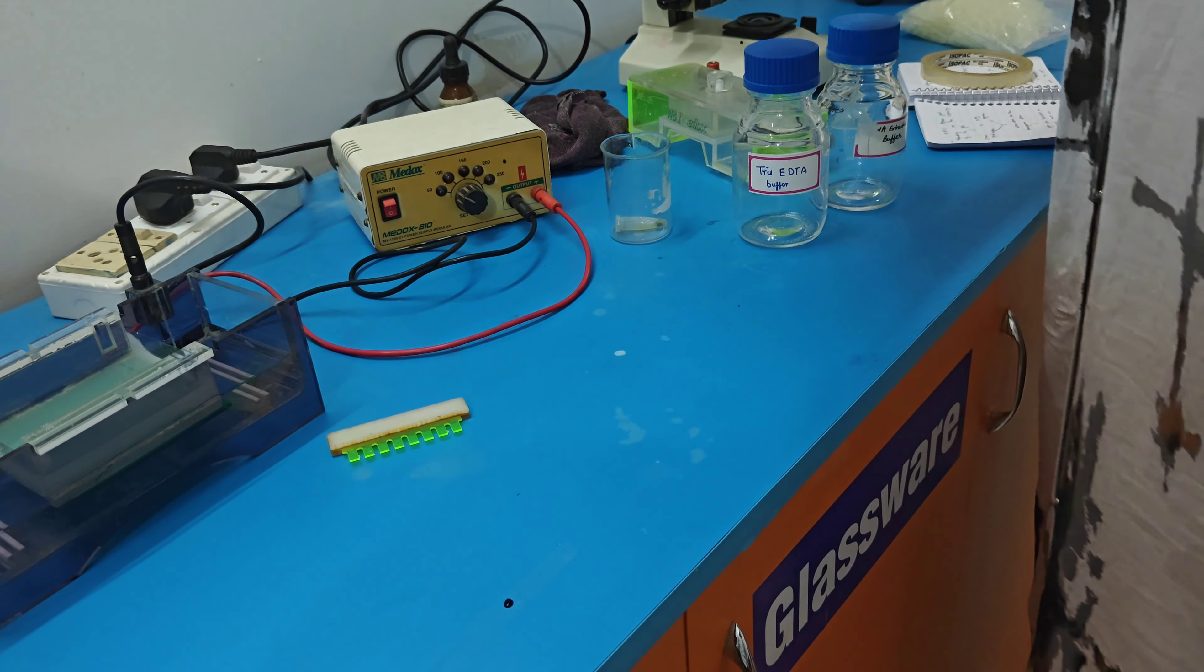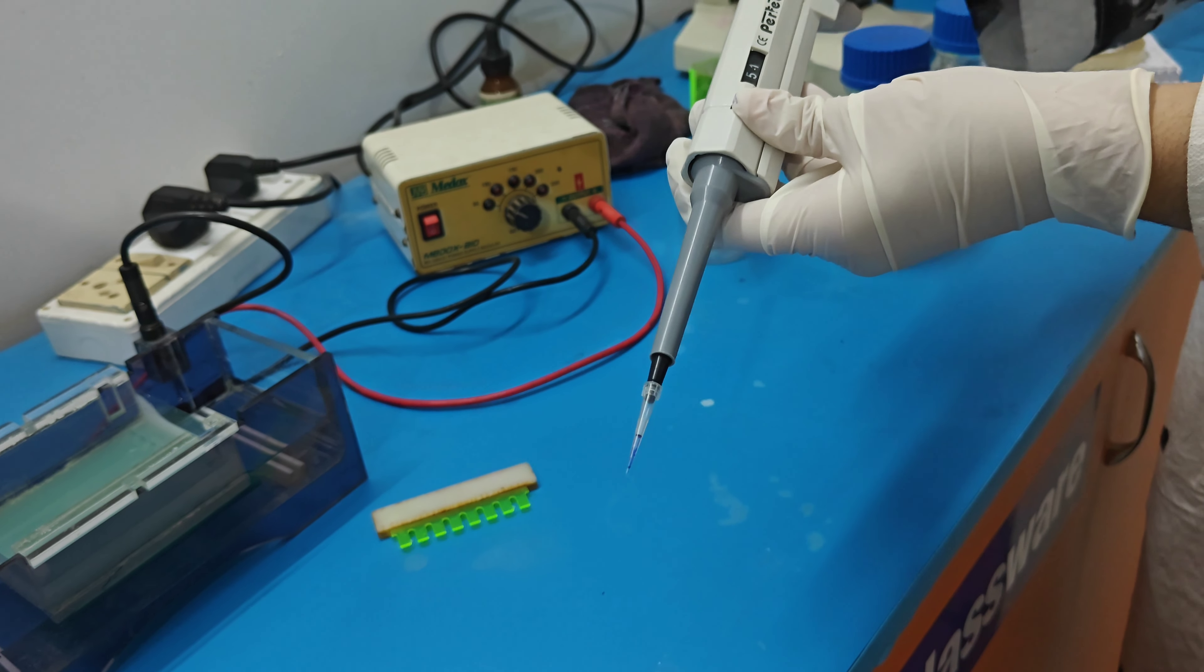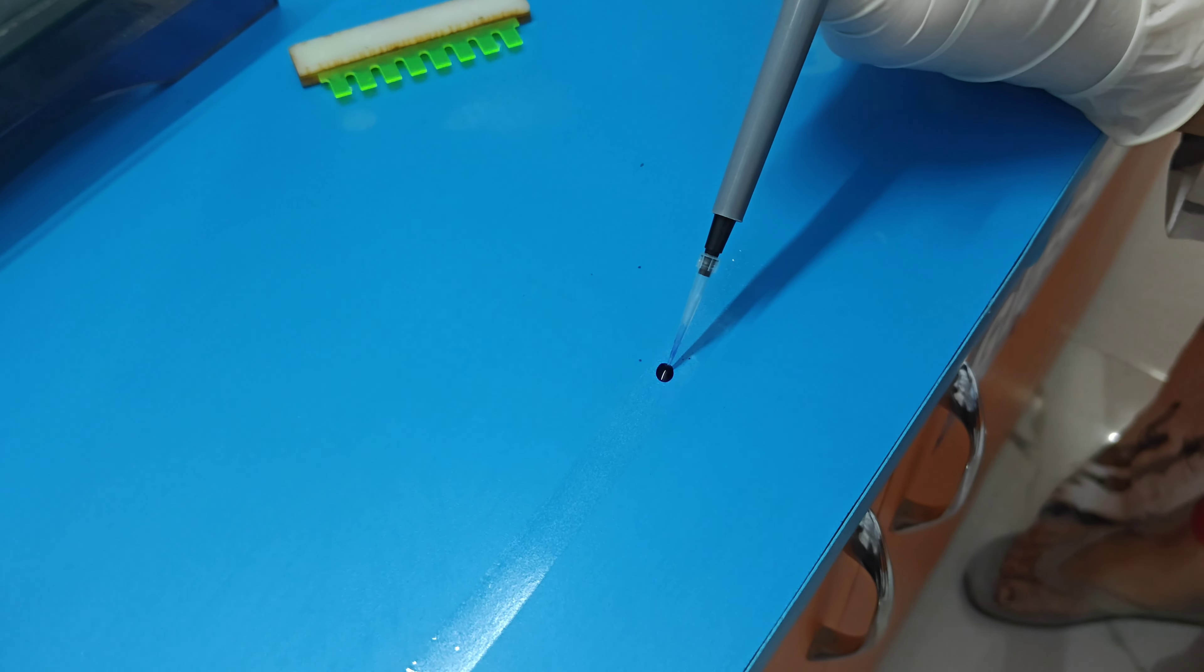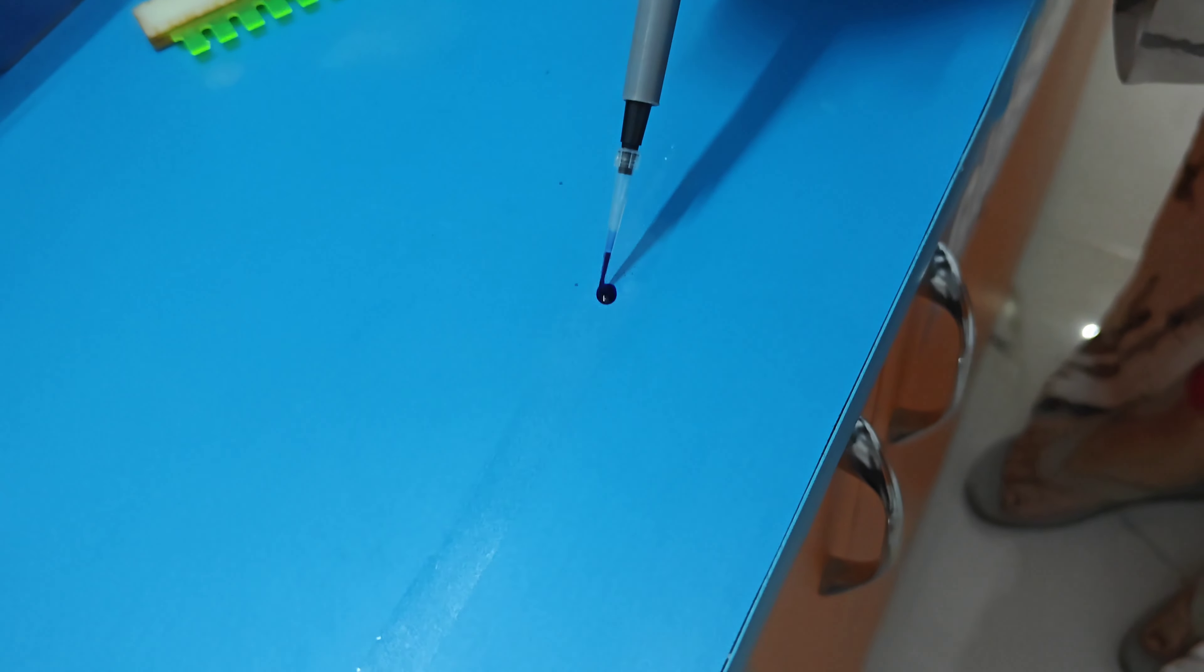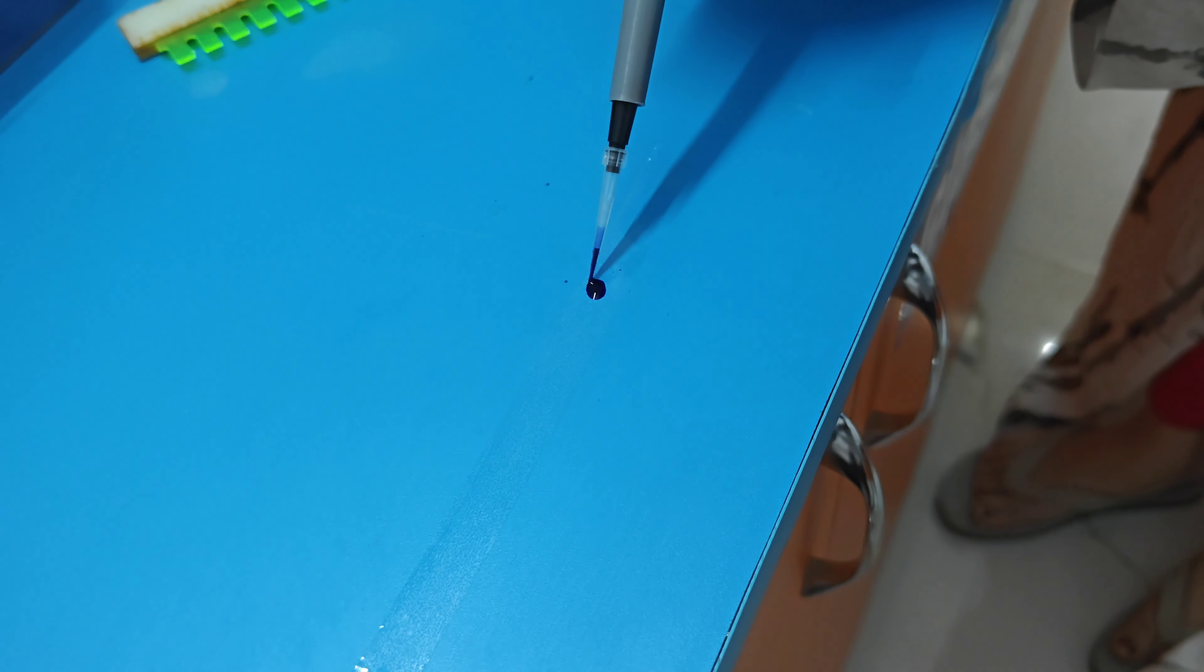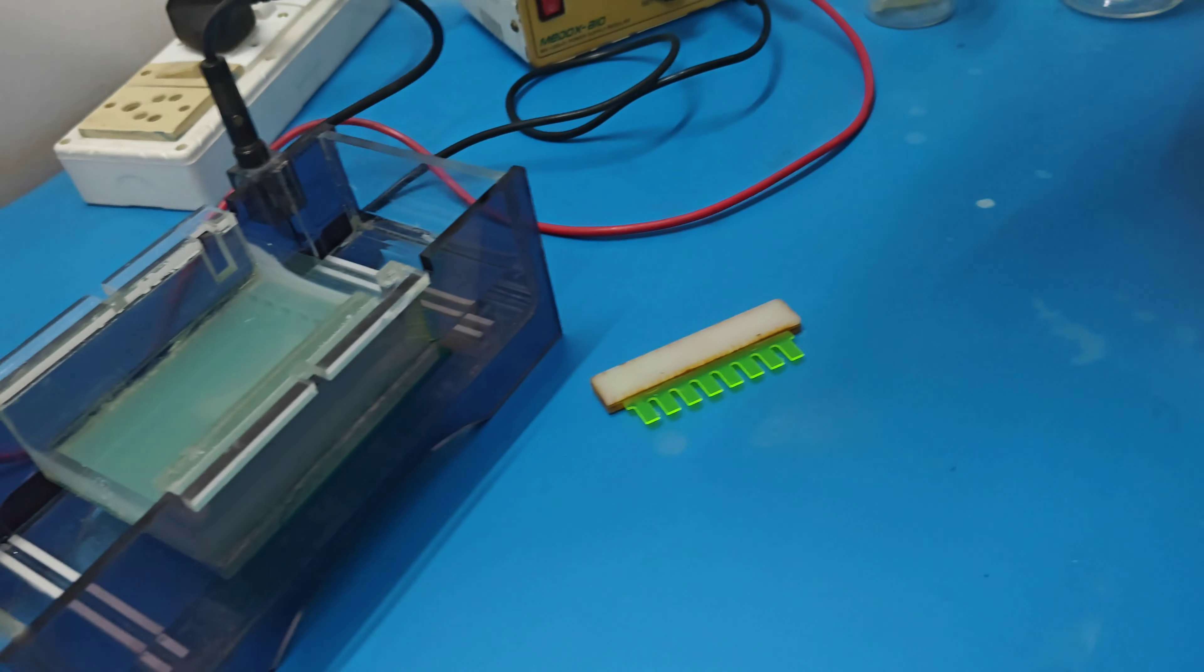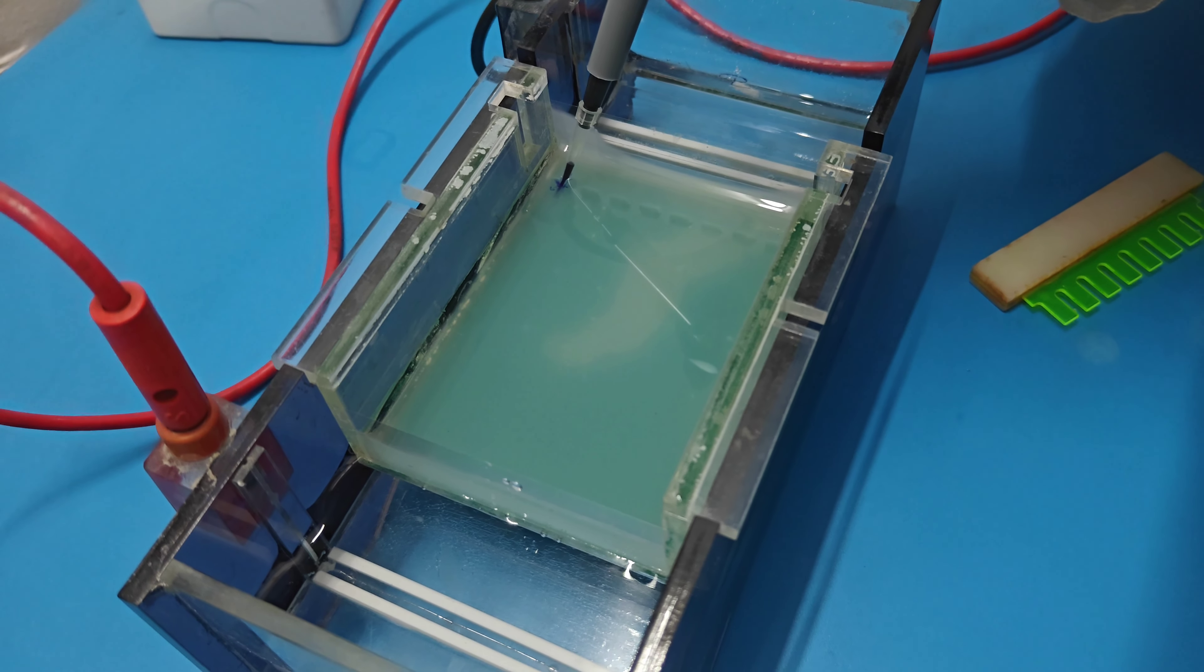Now before loading it into the agarose we have to mix it properly. So now I am going to mix the DNA sample and loading dye. This is the way of mixing of loading dye and sample. I am going to load into the casting tray for the agarose gel. Do very carefully and drop into a well.